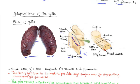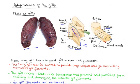The gills have specific structural adaptations that enhance gases exchange with the water. First, the mere presence of the gill bar, being bony, provides support to the gill rakers and the filaments. Because the filaments are very delicate, they must be supported, and this support is provided by the bony gill bar. Also, the bony gill bar is curved to provide a large surface area for supporting numerous gill filaments.